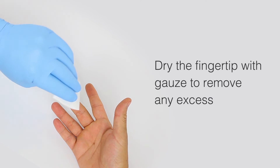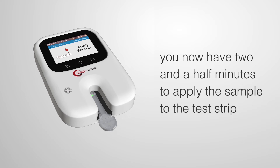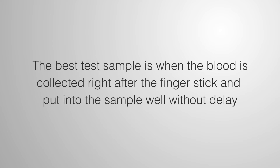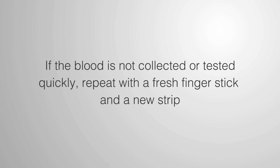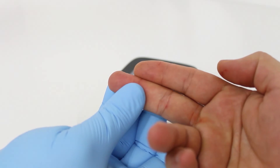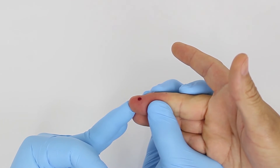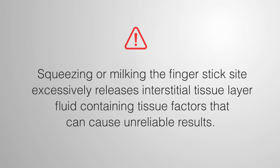Clean the patient fingertip with an alcohol wipe and dry with gauze to remove any excess. After 'Apply Sample' is displayed, you have two and a half minutes to apply the sample to the strip. The best test sample is when blood is collected right after the finger stick and put into the sample well without delay. If the blood is not collected or tested quickly, repeat with a fresh finger stick and a new strip. Use only 21-gauge lancets, as smaller diabetes lancets do not produce sufficient whole blood volume. Just a 10 to 12 microliter drop of blood sample is required. Remember, squeezing or milking the finger stick site excessively releases interstitial tissue layer fluid containing tissue factors that can cause unreliable results.